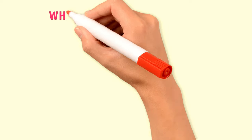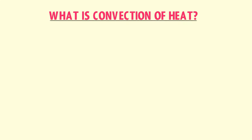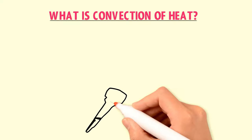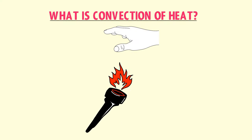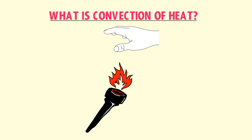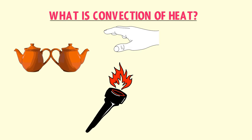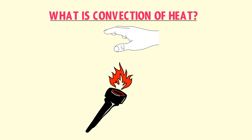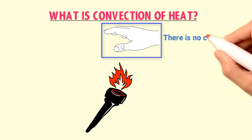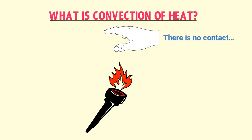Now let me explain the concept of convection of heat. Consider placing your hand slightly above the fire — you feel the hotness of the fire. In the previous section, we learned that heat energy flows only when there is contact between the hot and cold objects. But here your hand doesn't touch the fire, meaning there is no contact and no direct medium. So what is happening?